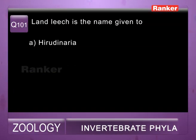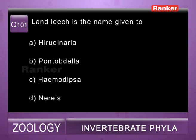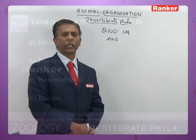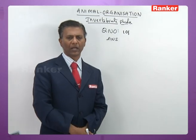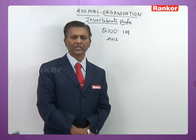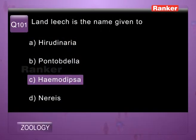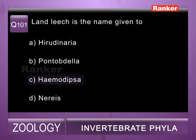Question 101: land leech is the name given to — the answer is c) Haemadipsa. Haemadipsa is commonly called land leech.